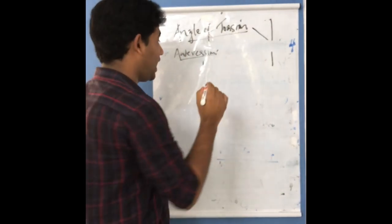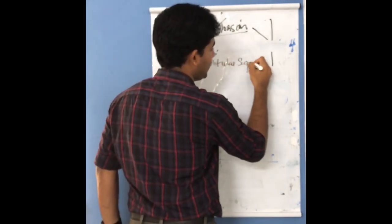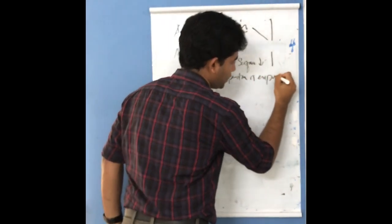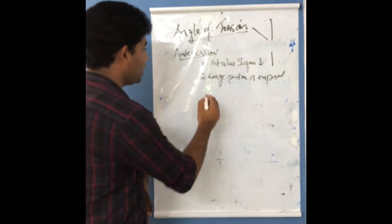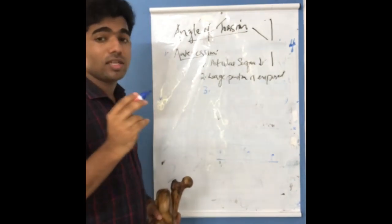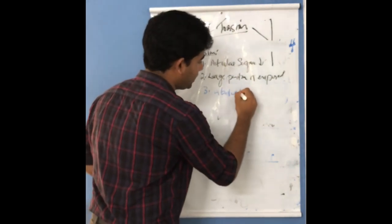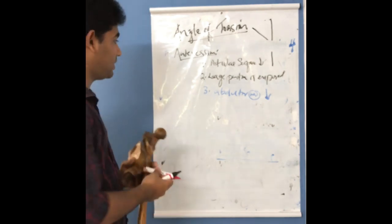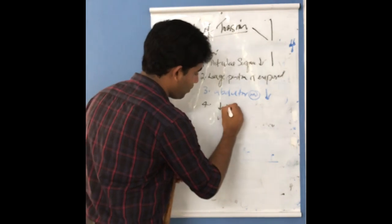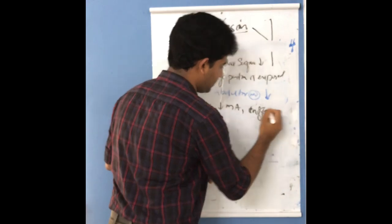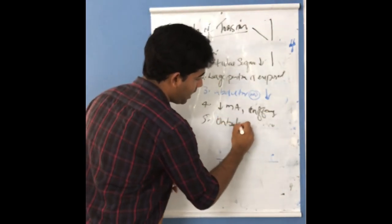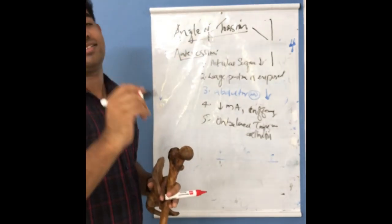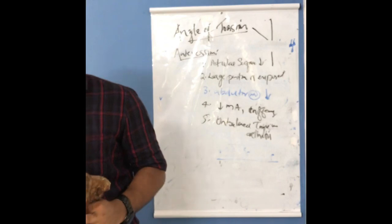So the changes are: first, articular surface area decreases as a large portion of the femoral head is exposed. As a result, abductor muscle torque decreases and efficiency of the abductor muscle decreases, resulting in decreased moment arm and inefficiency of the muscles. This can result in unbalanced torque which produces conditions like arthritis.